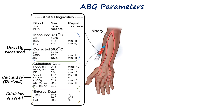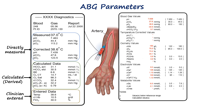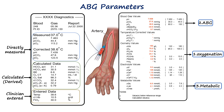Modern advanced analyzers can also directly measure additional metabolic markers like lactate and creatinine. The combination of these three data types allows for comprehensive assessment of a patient's oxygenation, acid-base status, and metabolic condition.